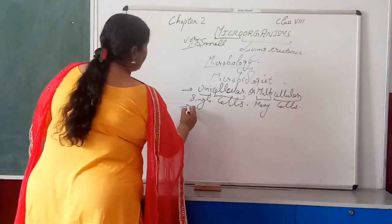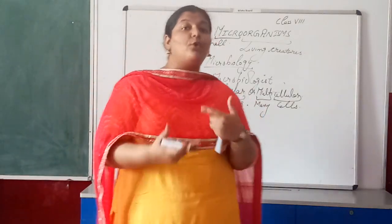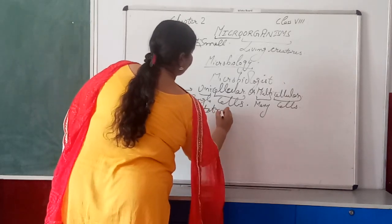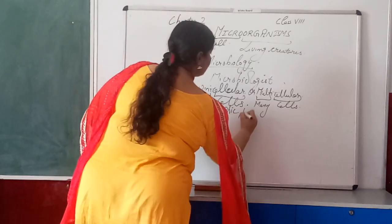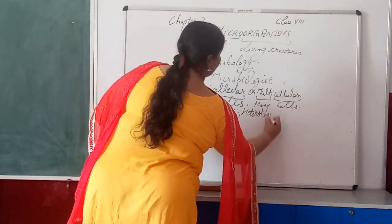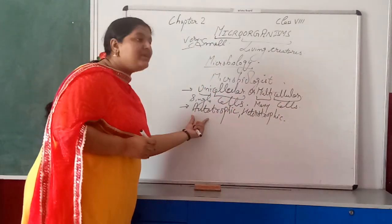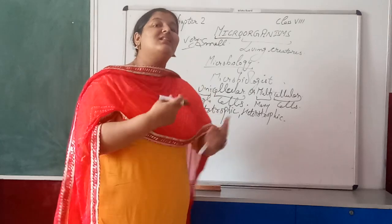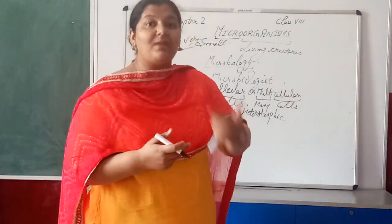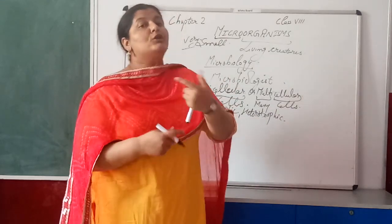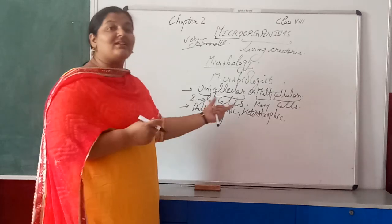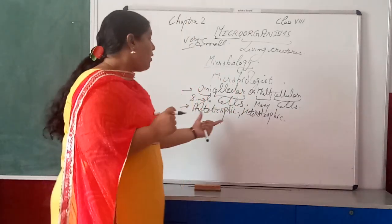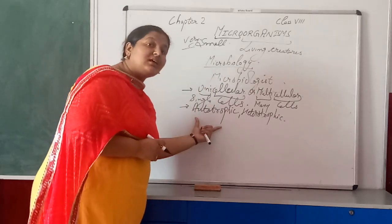The next characteristic is nutrition — which mode of nutrition do micro-organisms follow? The modes are autotrophic and heterotrophic. 'Auto' means self and 'trophic' relates to nutrition. Autotrophic organisms make their own food, like green plants which use the pigment chlorophyll. Similarly, certain micro-organisms like algae also have chlorophyll and make their own food, essentially mimicking green plants.